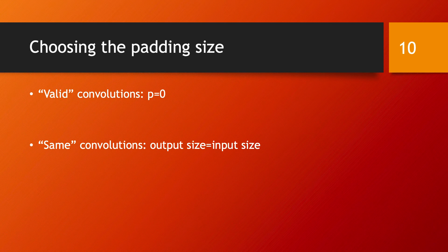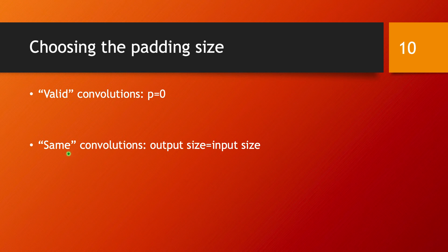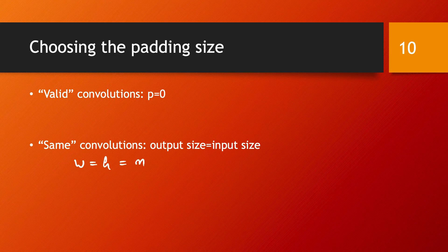The question is how to choose the padding size. In deep learning terminology, there are two types of convolutions. One is called a valid convolution, which simply means you choose no padding — P equals zero. The other type is called a same convolution, which means you calculate your padding such that the output size is the same as the input size, avoiding the shrinkage problem. Same convolution only works if you have square images where the width and height are equal.